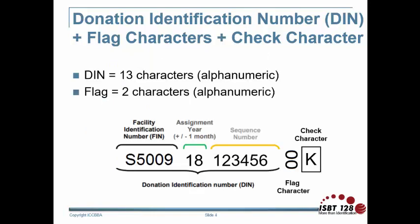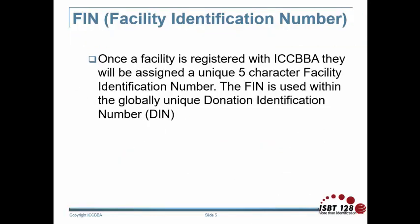The DIN itself is 13 characters long. In this example, the first five characters identify the facility that assigned the DIN, followed by the two-digit year the DIN was assigned, then a six-digit Sequence Number assigned by the facility. The flag characters in this example are rotated 90 degrees clockwise to make them visually different from the DIN, and the check character follows with a box around it to clearly distinguish it from the DIN. ICC-BBA maintains a database that uniquely identifies all registered facilities, which contributes to the traceability of the ISBT-128 standard.